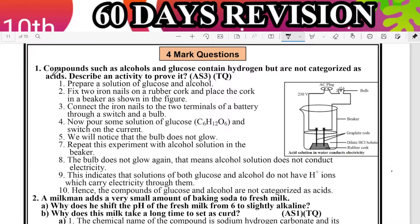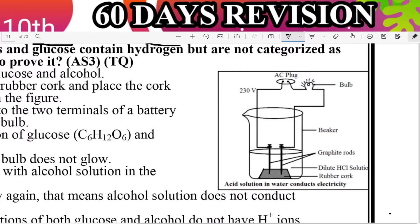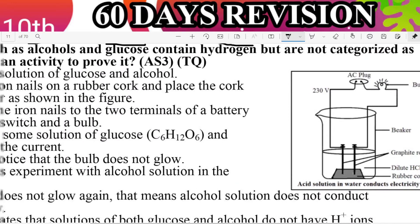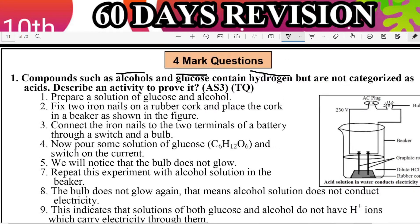First question: Compounds such as alcohol and glucose contain hydrogen but are not categorized as acids. Describe an activity to prove it. Alcohol and glucose both contain hydrogen, but they are not treated like acids — electricity does not pass through them like acids do. This is the most important diagram-based question — it can appear as a four marks or two marks question.